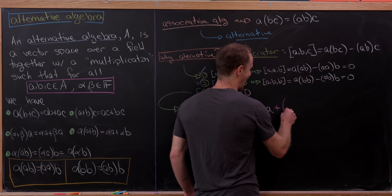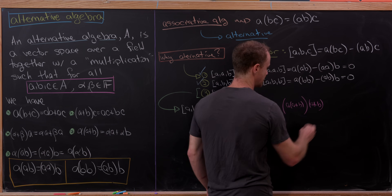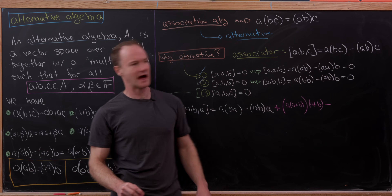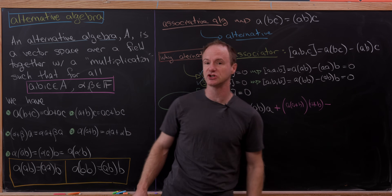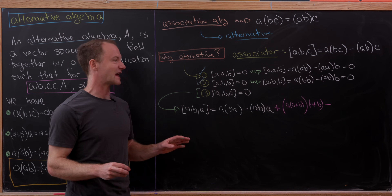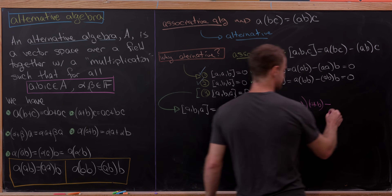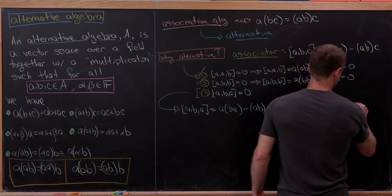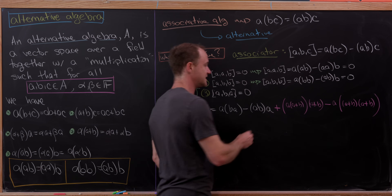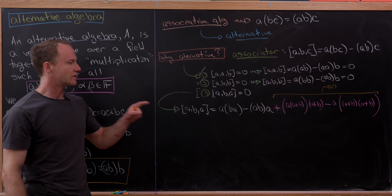Here I'll add A times (A plus B) times (A plus B), and then subtract the same thing. Since A plus B is repeated, I can apply the alternative rule to reassociate that term. So we can't reassociate all the time — that's the whole point — but we can reassociate when the terms are repeated like this. This thing is equal to zero by the axioms of an alternative algebra.